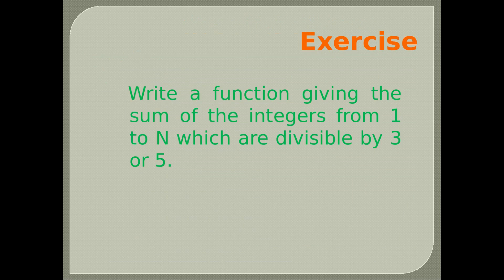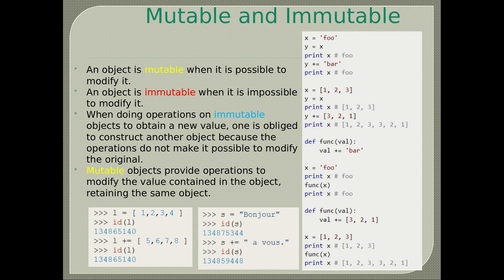Write a function giving the sum of integers from 1 to n which are divisible by 3 or 5. Mutable and immutable: an object is mutable when it is possible to modify it. An object is immutable when it is impossible to modify it. When doing operations on immutable objects to obtain a new value, one is obliged to construct another object because the operations do not make it possible to modify the original.